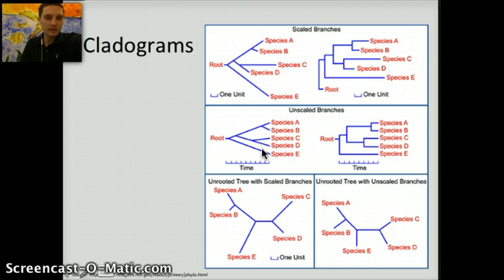Additionally, with cladograms we can have scaled and unscaled. The primary difference is that in a scaled cladogram, the length of a branch indicates how much evolutionary change occurred since it split from a sister clade with at least one node. Rooted cladograms show evolutionary relationships, whereas unrooted just show the relationships between the different species.